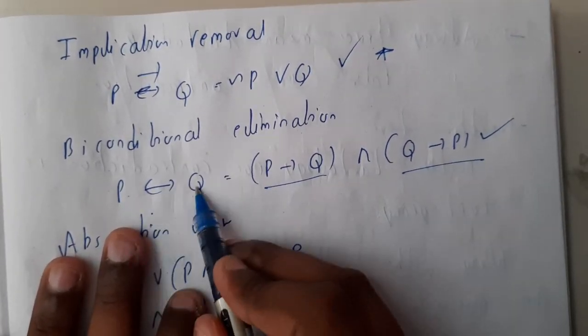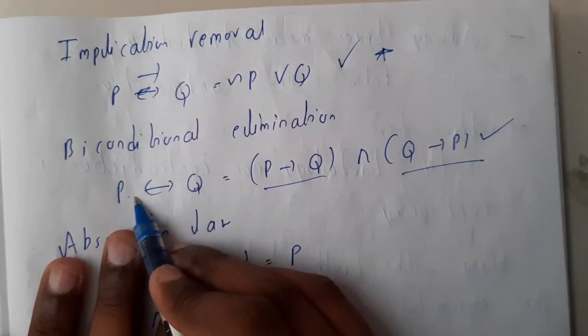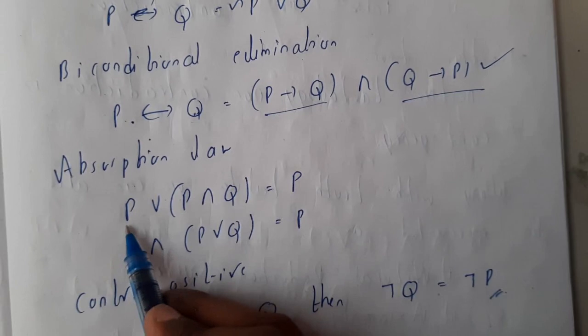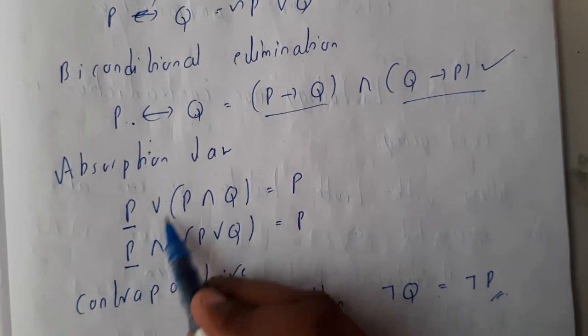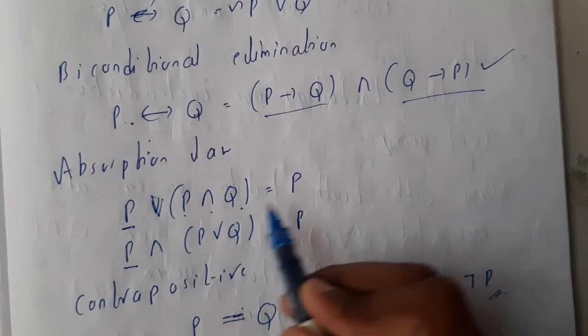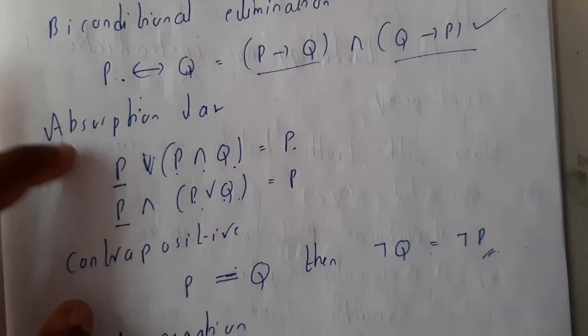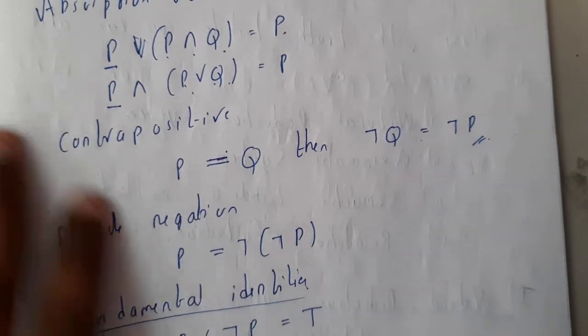Absorptive law: this is really simple. P∨(P∧Q) will be P, and P∧(P∨Q) will be P. Please remember these two also. These are not so used, but if possible they may give a question.